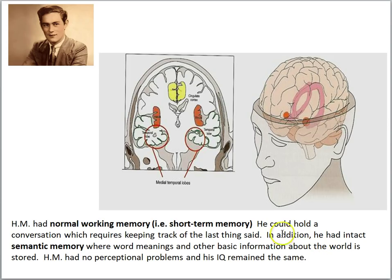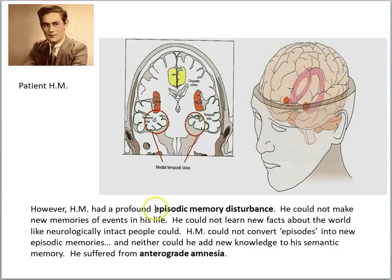That's fairly surprising because large chunks of the brain were removed and it didn't seem to have any effect on these mental capacities. However, HM did have a profound episodic memory disturbance. He could not make new memories of events in his life, he could not learn new facts about the world, and he could not add new knowledge to his semantic memory. He suffered from anterograde amnesia.